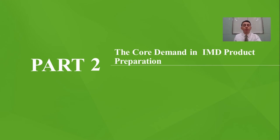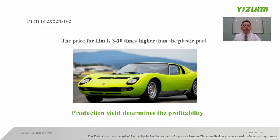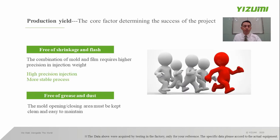In the second part, I would like to share the core demand in IMD product preparation. From the perspective of material, IMD film is very expensive. Taking a handset rear panel as an example, the price of the plastic part in commonly known PC material costs about 1 to 1.5 yuan, but an IMD decorative film costs about 10 to 15 yuan, which is 3 to 10 times higher than the plastic part. If the plastic part is scrapped, the loss is about 1 to 1.5 yuan; however, if a product with the film is scrapped, the loss will be 10 yuan. As a result, product yield determines profitability of the project — a manufacturer with low yield will suffer loss, while a manufacturer with high yield will make profit. Production yield as a core determinant determines the success of the IMD project.